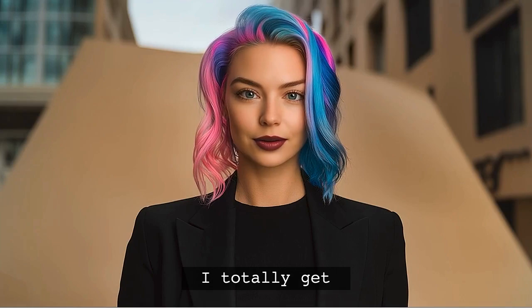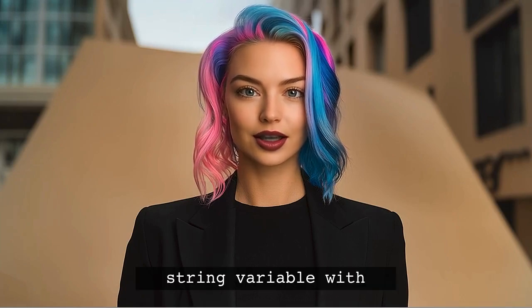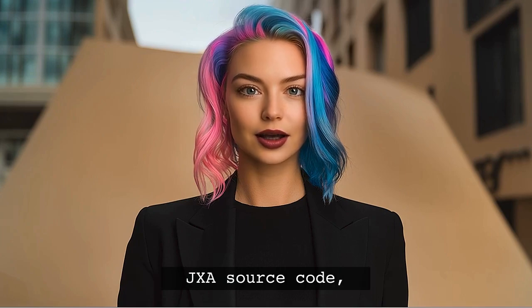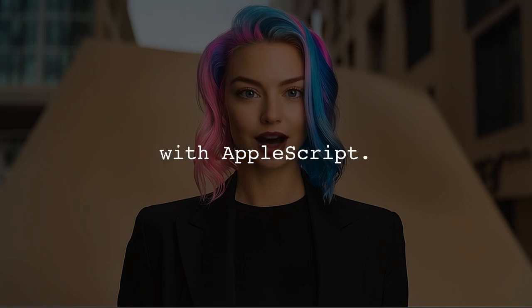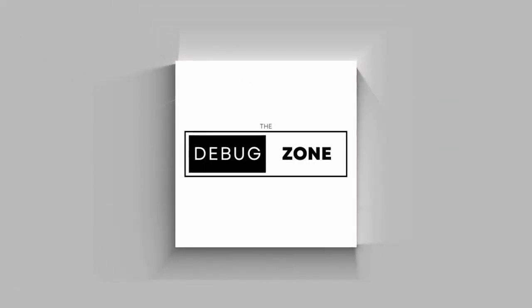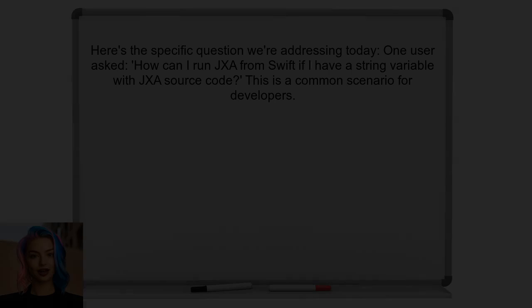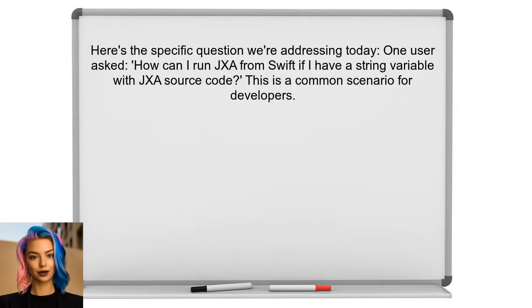You have this string variable with JXA source code and you want to execute it from Swift. It can be frustrating when you find out that nsAppleScript only works with AppleScript. Here's the specific question we're addressing today: how can I run JXA from Swift if I have a string variable with JXA source code? This is a common scenario for developers looking to integrate different scripting languages.